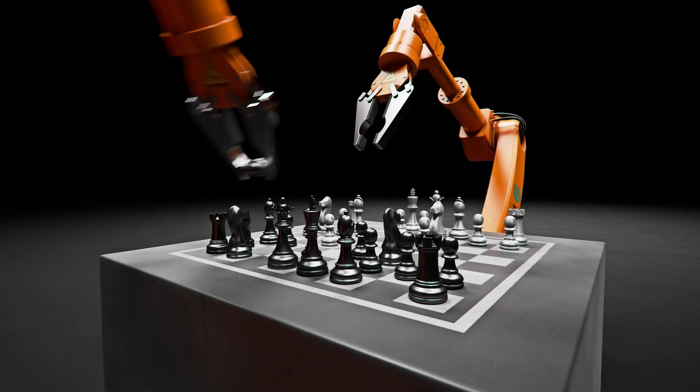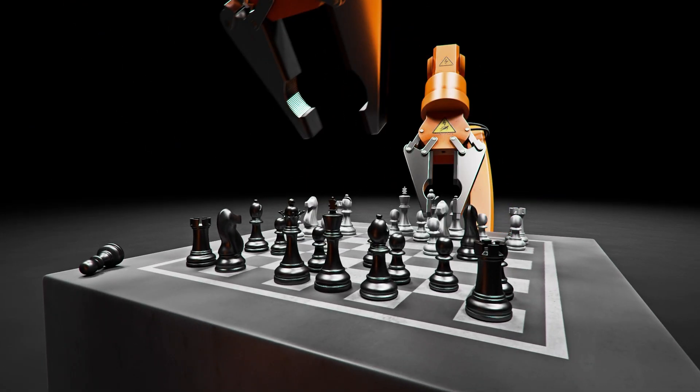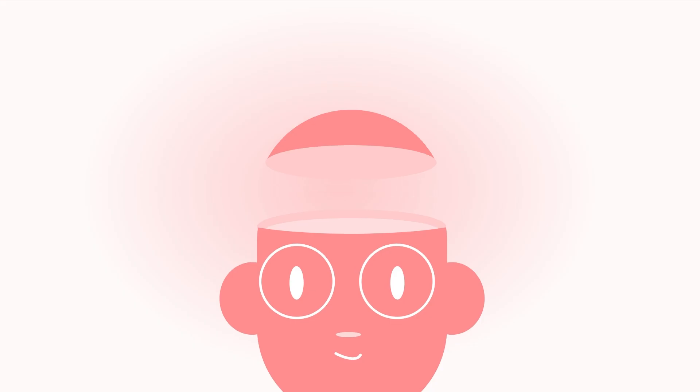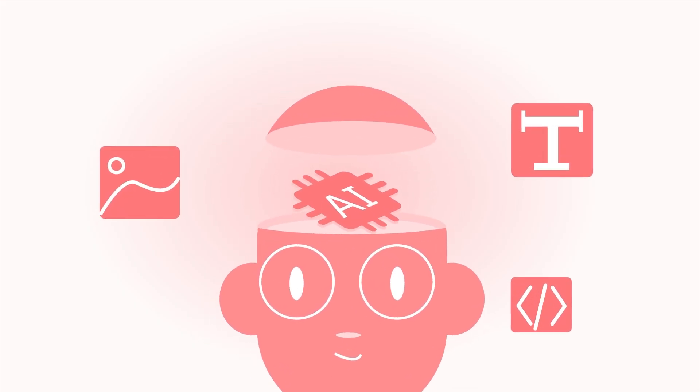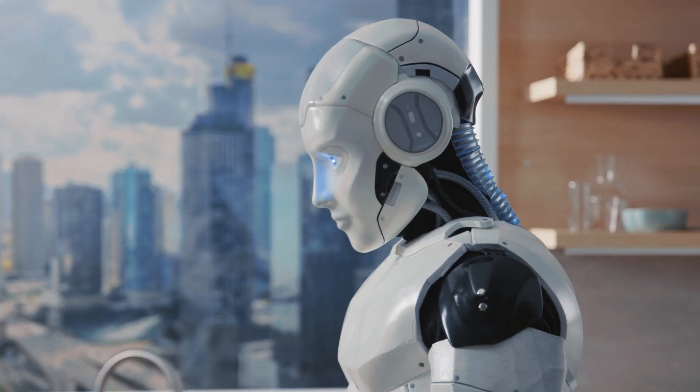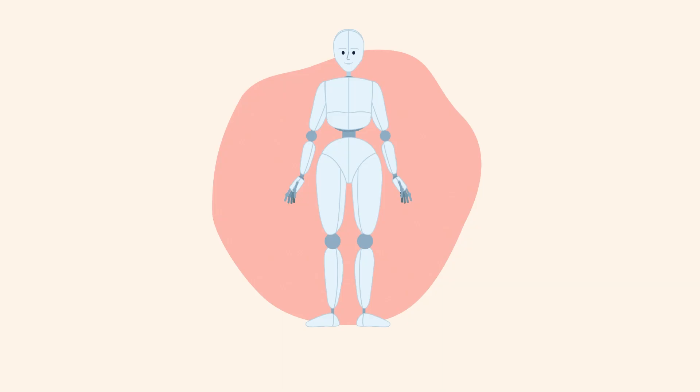A chess program can beat a grandmaster, but has no clue it's playing. Your chatbot can generate Shakespearean poetry, but doesn't know it has. In other words, intelligence and consciousness can come apart. AI shows us you can act brilliant and still be a complete zombie.